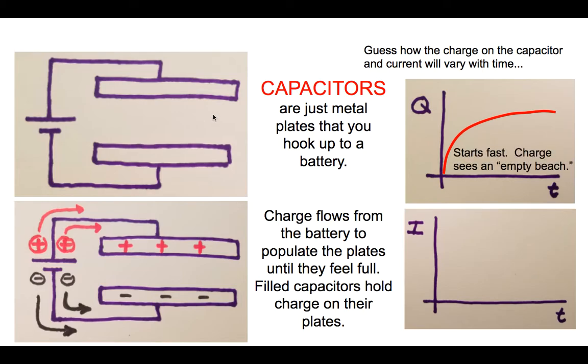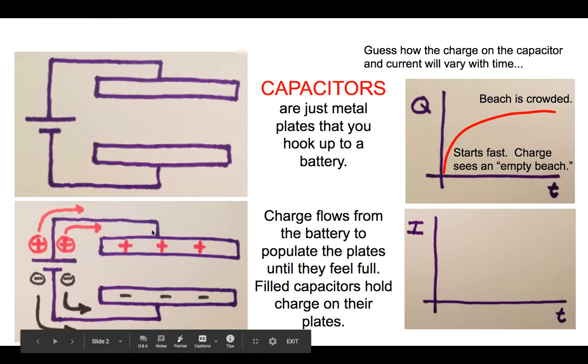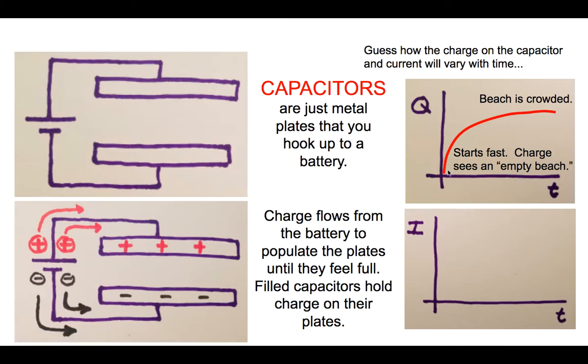First, it's going to be a mad dash to get over to the plates. The charge will see, like what I tell my students, an empty beach—a very inviting, awesome place to go, way better than being at the battery near other like charges. These charges repel and want to run over to the empty beach. But then the beach ends up getting full. In this bottom picture, that next electron is more reluctant to go to the plate now because there's already a bunch of electrons on there.